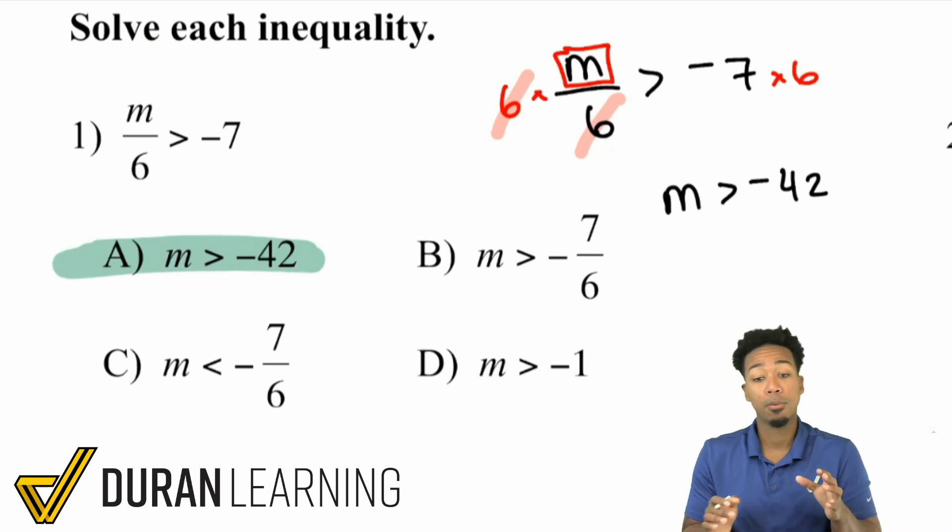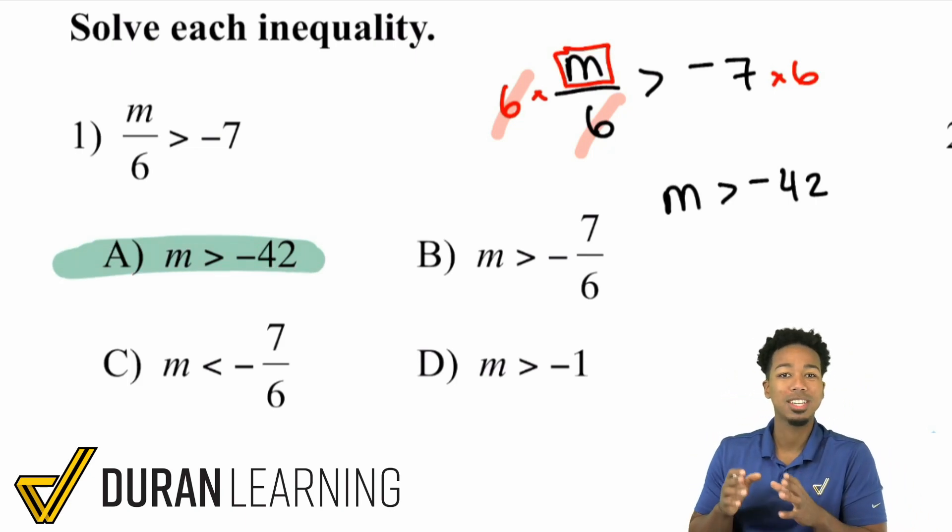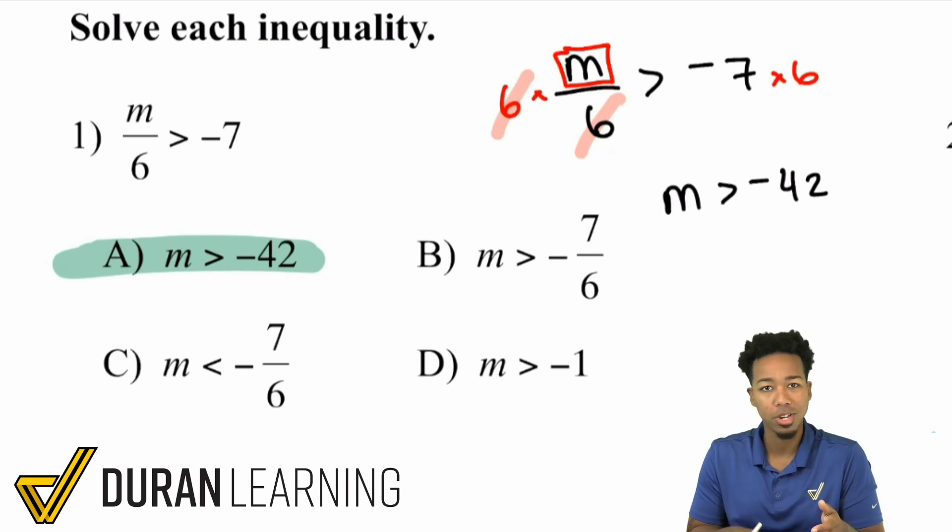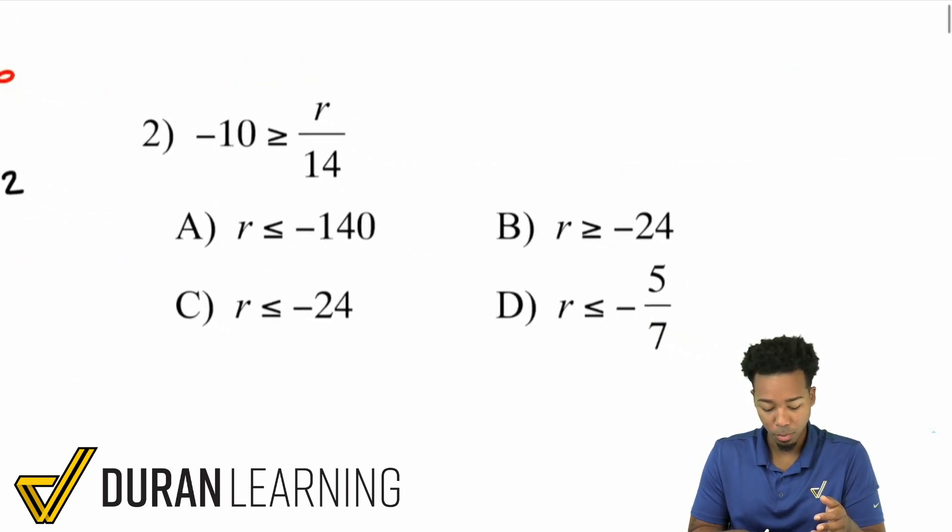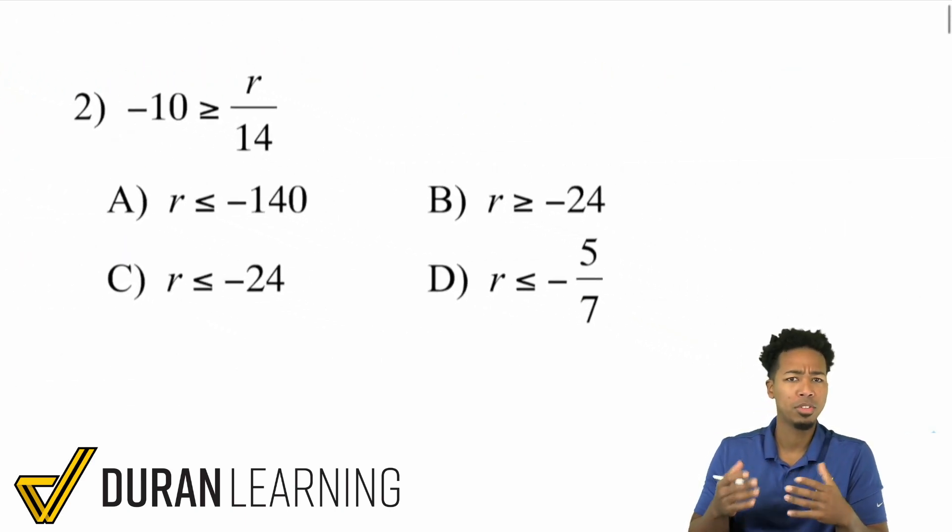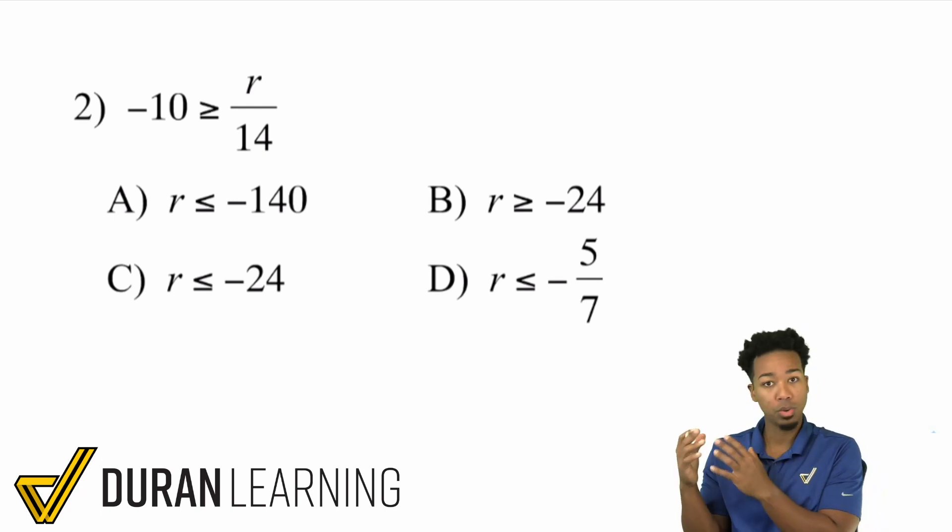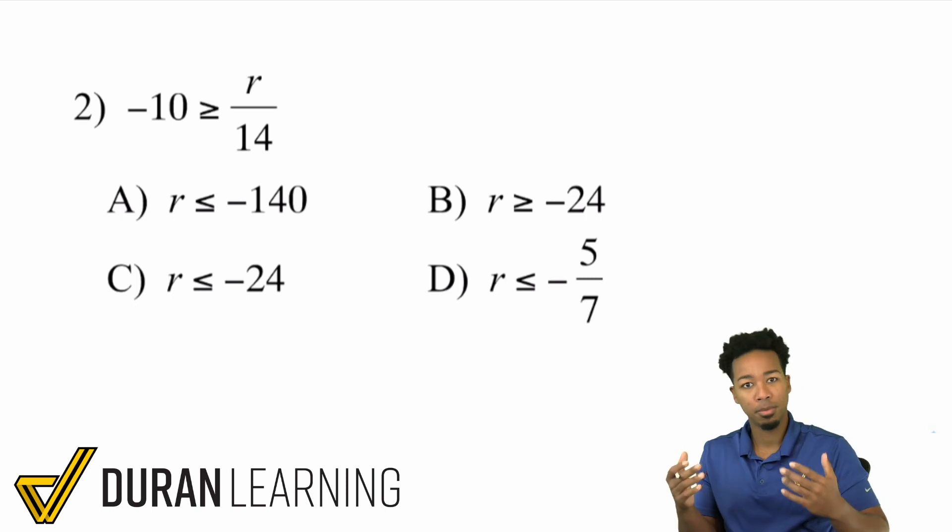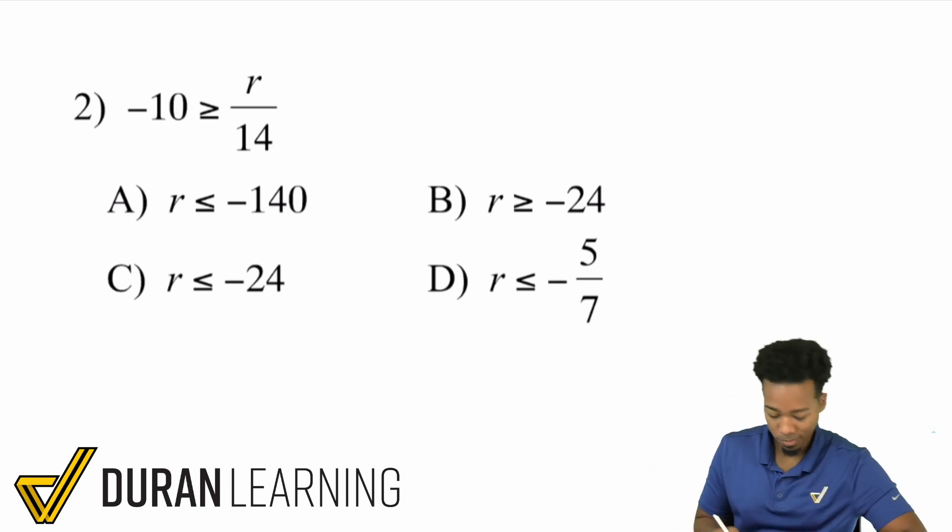So again, my math party people, what we're doing here is we're solving inequalities. They're just like equations, with the exception of, again, if you're multiplying both sides by a negative, we'll have to do something different. So we'll keep going until we find an example of that. But I'm going to show you again, it's one step inequalities. And then up next, we'll do two step and more from there.